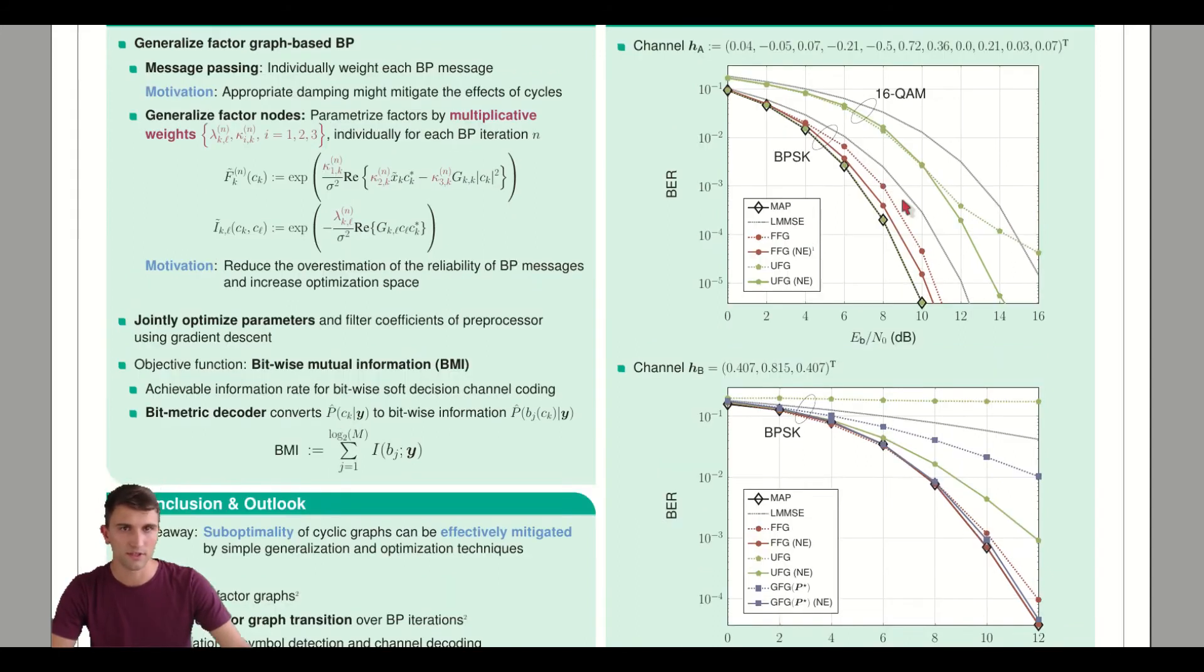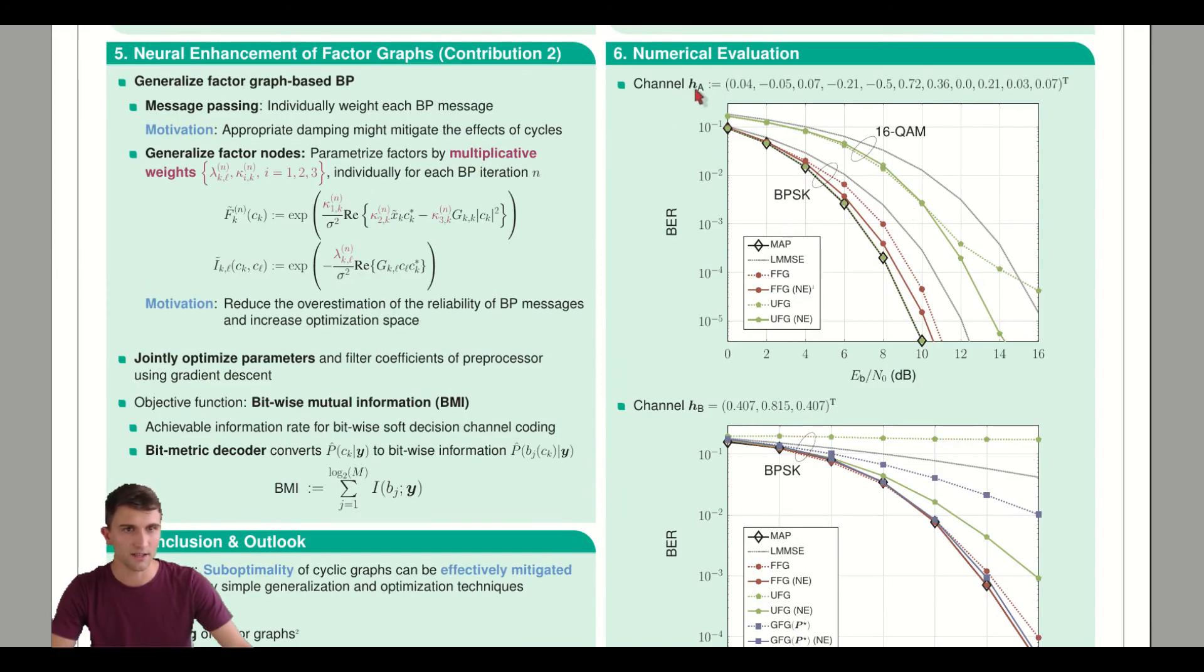For channel HA, we can see that the Forney model in red can also be improved. It does not reach quite the optimum performance, but quasi all curves can be improved.